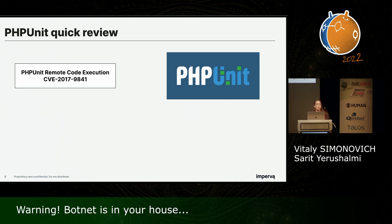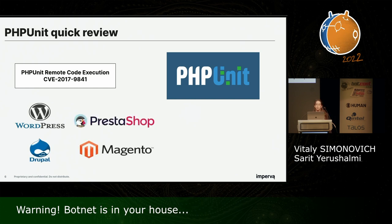To understand this hype, we started to analyze data from our data lake, with different IPs using the same payload over and over again, attacking different customers, which reminded us of botnet behavior. PHP Unit is a widely used testing framework for PHP, used to perform unit tests in the application development cycle. It is used in a variety of content management systems like WordPress, PrestaShop, Drupal, and many third-party modules. In 2017, a remote code execution vulnerability in PHP Unit was discovered, and the botnet we're about to discuss uses this vulnerability to spread — similar to the log4shell and spring4shell we recently witnessed.